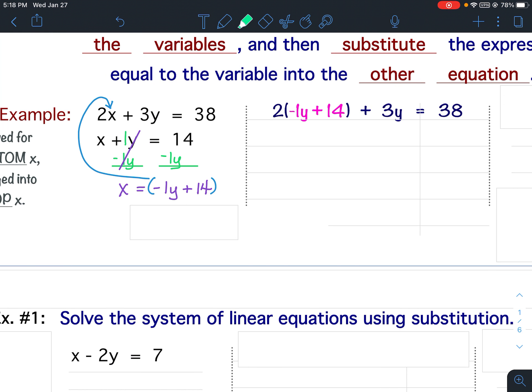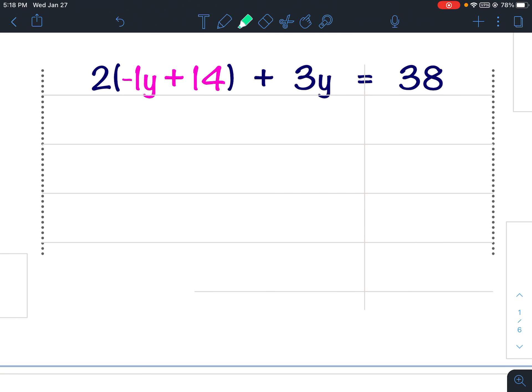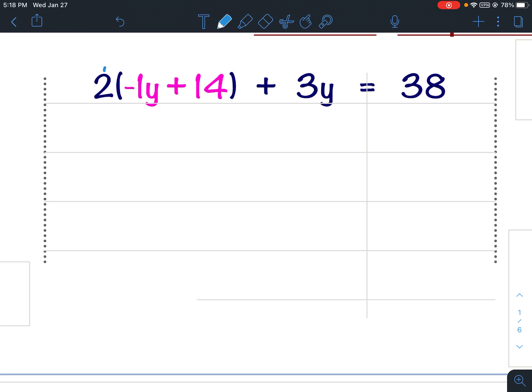So now instead of 2x plus 3y, it's 2 times negative 1y plus 14 plus 3y equals 38. Notice how when I substituted in, it eliminated the x variable, and the only variable in this equation is a y. So now this becomes a multi-step equation. I'm going to start with the distributive property. So 2 times negative 1y would be negative 2y. 2 times 14 is positive 28. And then bring down the plus 3y, keep the equal signs lined up, bring down the 38.